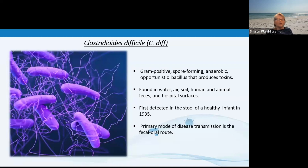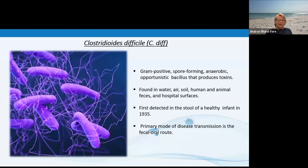C. diff is commonly found in water, air, soil, human and animal feces, and it can be found in healthy people where it causes no symptoms. It was first isolated in 1935 in the stool of a healthy infant, and it wasn't until 1978 that it was thought to be pathogenic — identified as a source of toxin in the stools of patients with colitis and responsible for most cases of antibiotic-associated diarrhea. Its primary mode of transmission is the fecal-oral route.